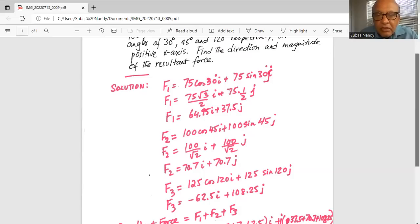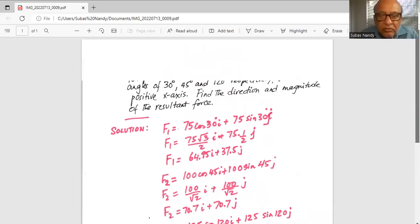Next one is sine of 120 degree. That should be positive. It's in the second quadrant where sine is positive. So find out sine 120 degree from your calculator, multiply with 125 and you get 108.25j.